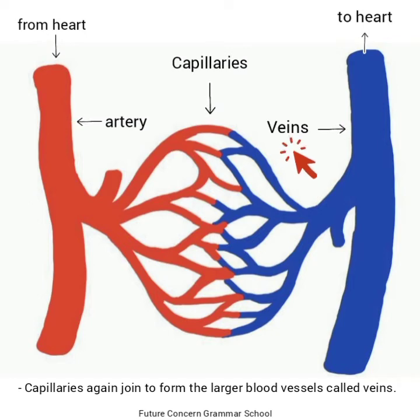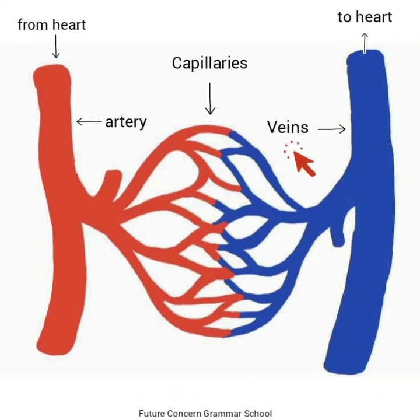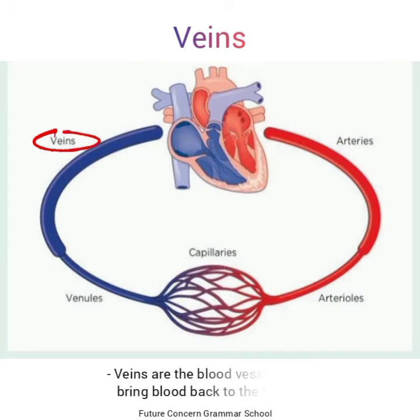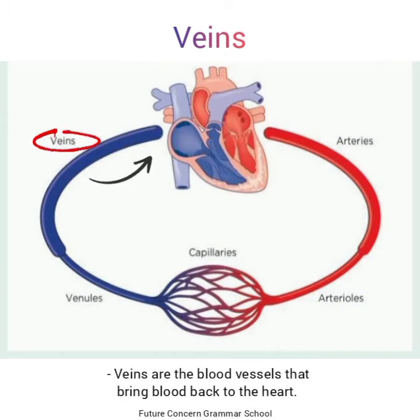Capillaries again join to form larger blood vessels called veins — capillaries دوبارہ مل کر بڑی خون کی نالیاں بنا دیتی ہیں جنہیں ہم veins کہتے ہیں۔ Veins are the blood vessels that bring blood back to the heart — veins وہ blood vessels ہوتی ہیں جو کہ خون کو دل کی طرف واپس لاتی ہیں۔